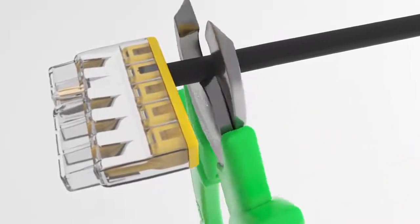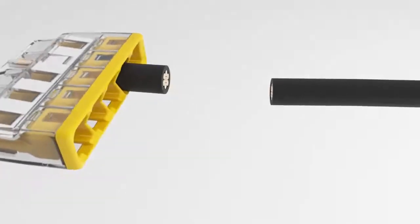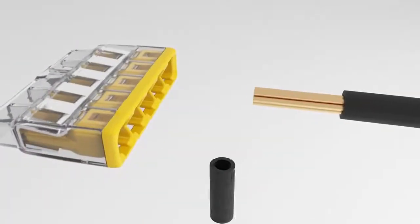Stranded conductors cannot be removed once they are connected. They are just cut off close to the connector, stripped again and pushed into a new connector.